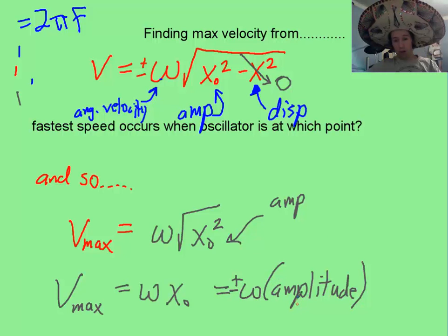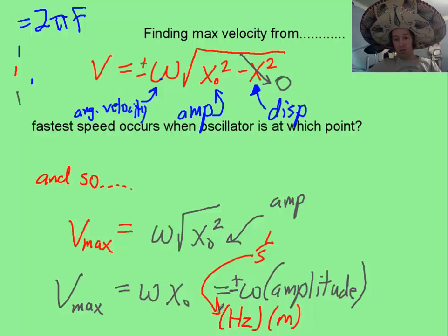And isn't it clever unit-wise how this works out, where if amplitude is going to be in meters, and your angular velocity is going to be in hertz. You can think of a hertz as a 1 over a second, and so that's going to give you meters per second for velocity. Very clever!